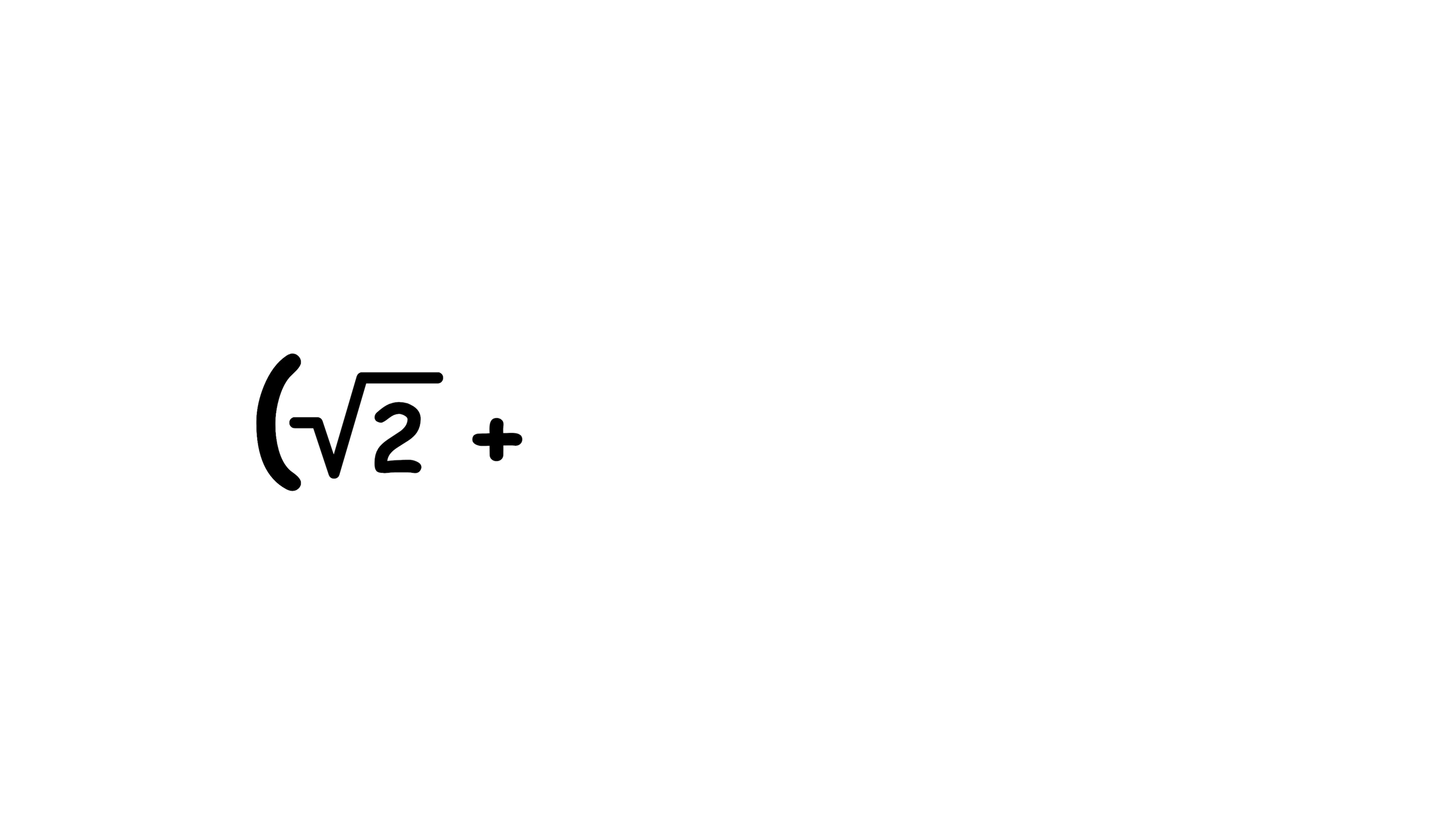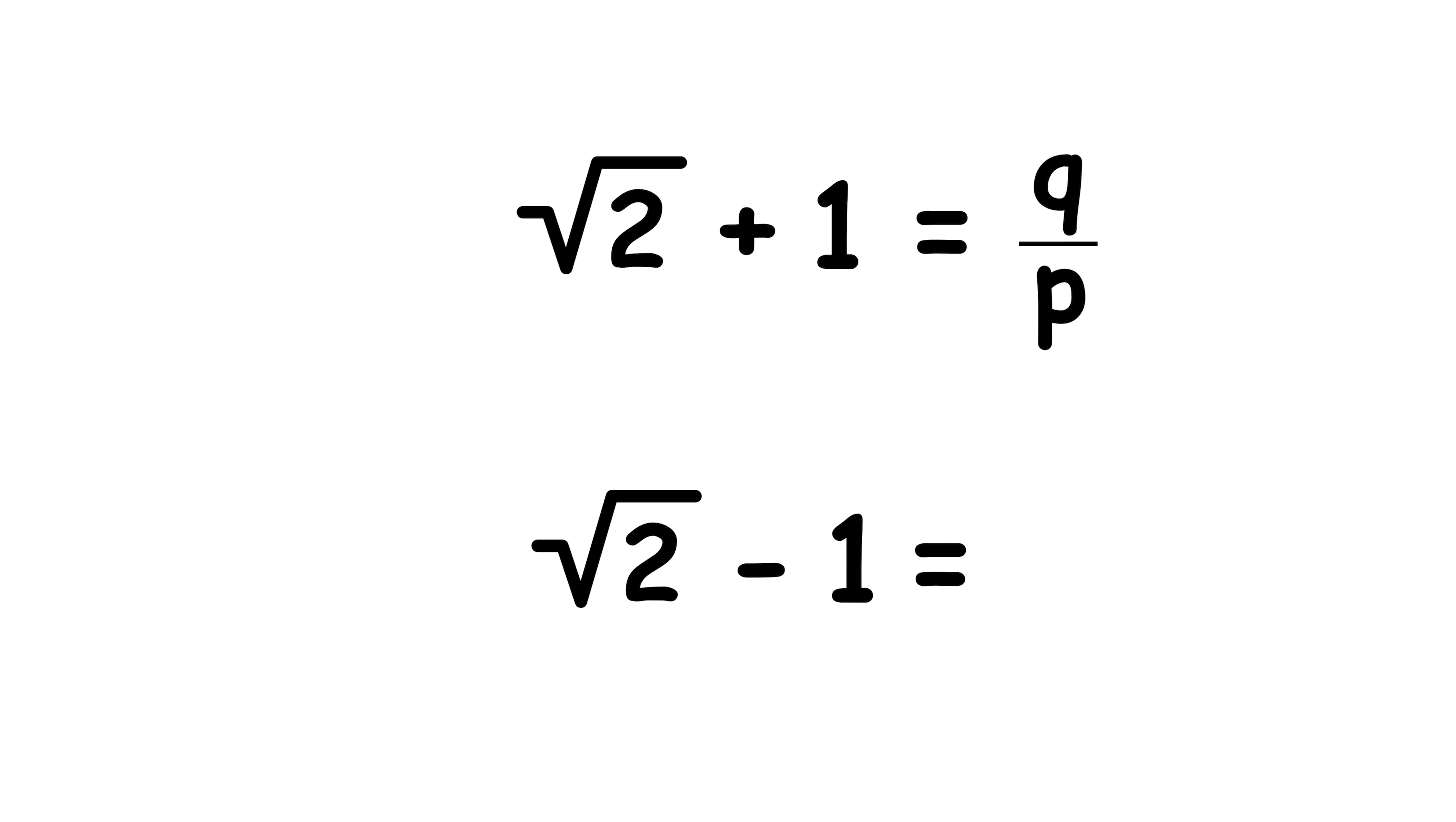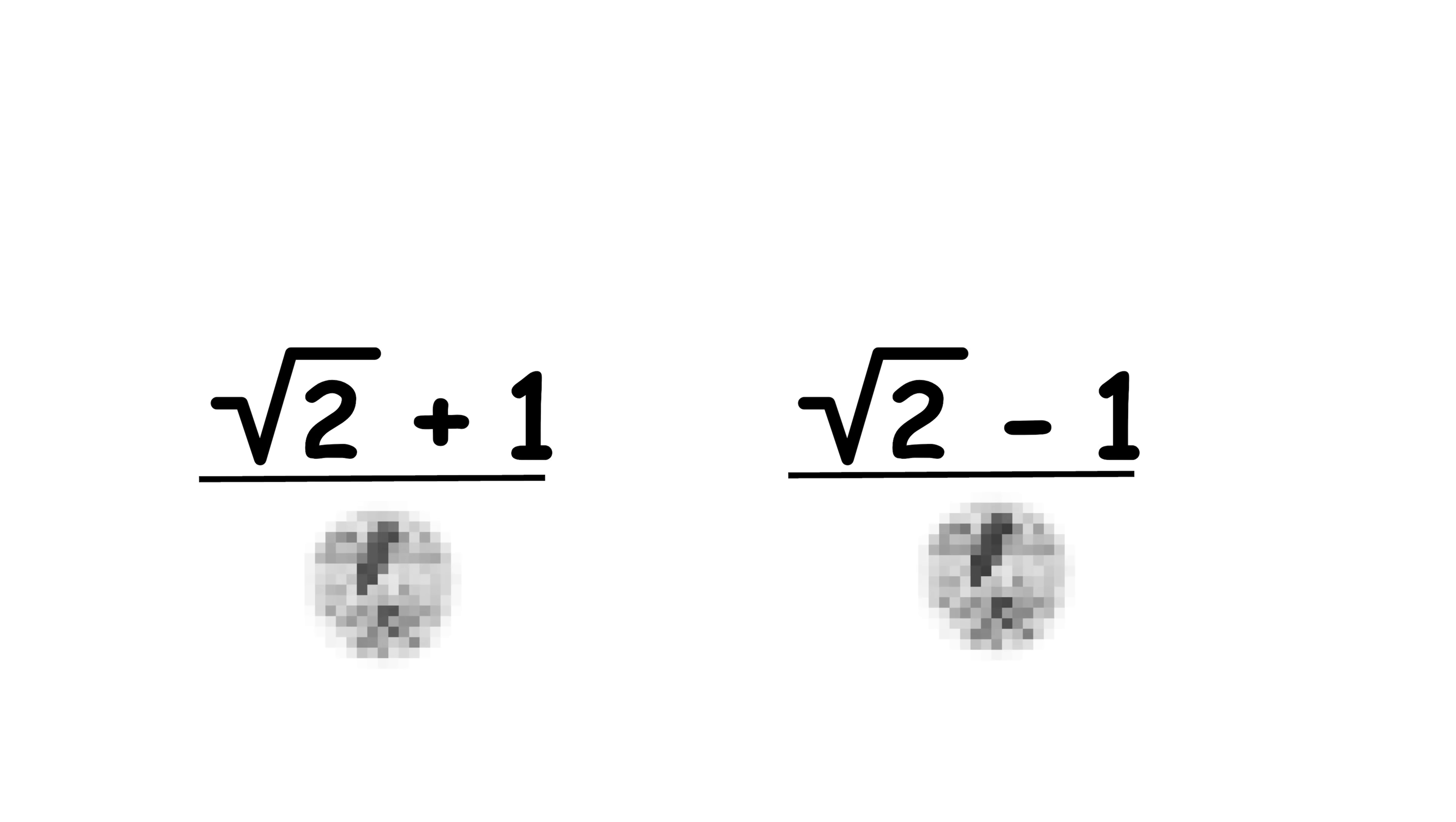You'll notice that square root 2 plus 1 and square root 2 minus 1 differ from each other by an integer, that being 2, which can be shown by a simple subtraction. With these values being q over p and p over q respectively, we just showed that these fractions must have the same denominator. In other words, p is the same as q. But the assumption that p equals q goes against our earlier statement that q is greater than p, so we have arrived at a contradiction once again, and square root 2 cannot be rational.